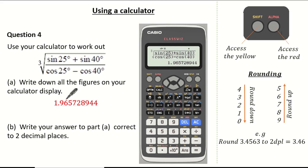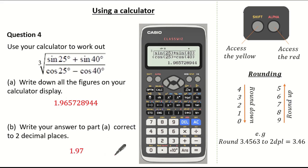Rounding this to two decimal places we are looking at our 6. The 5 to the right of the 6 tells us we must round up, giving a final answer of 1.97. I hope this tutorial has been useful, especially when accessing functions which are yellow using our shift key or red using our alpha key.